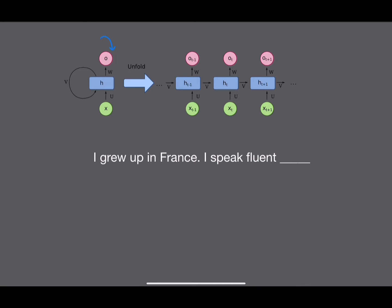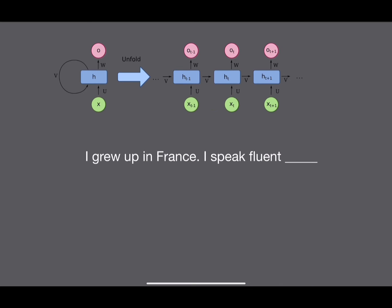We get some output and we pass something back into the model. When we unfold this, we have the initial time step. We think of each token or word in our sentence as a time step — t equals zero for the first word, t equals one for the next, and so on. We pass in 'I', then 'grew', and so on. The model outputs information as a vector that's used in the next time step.